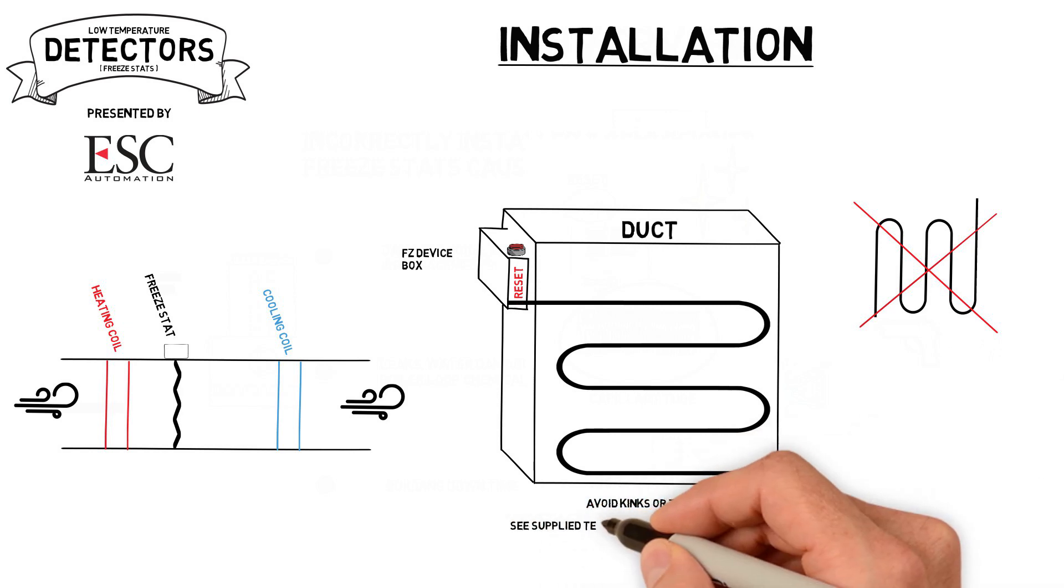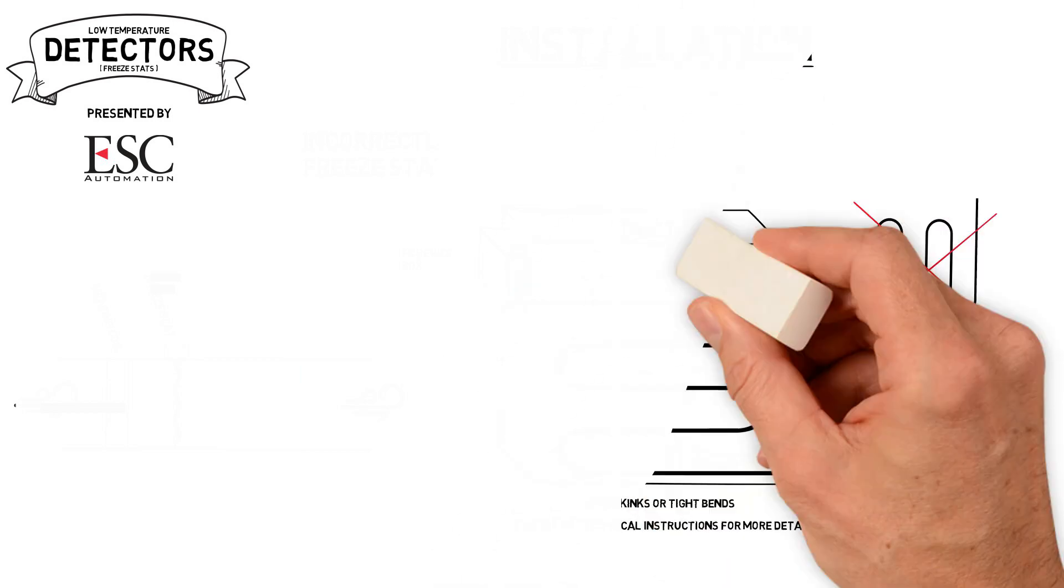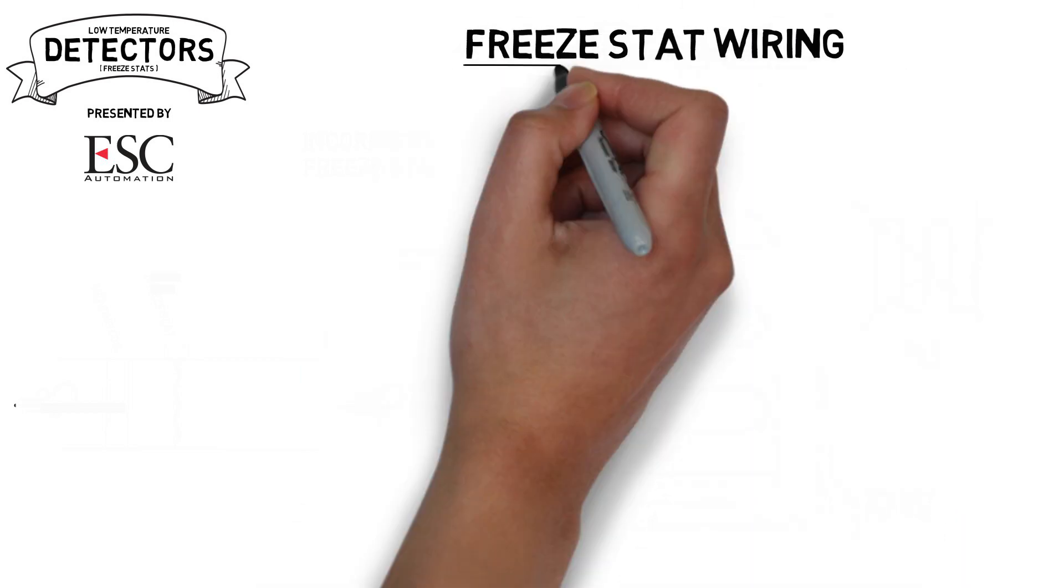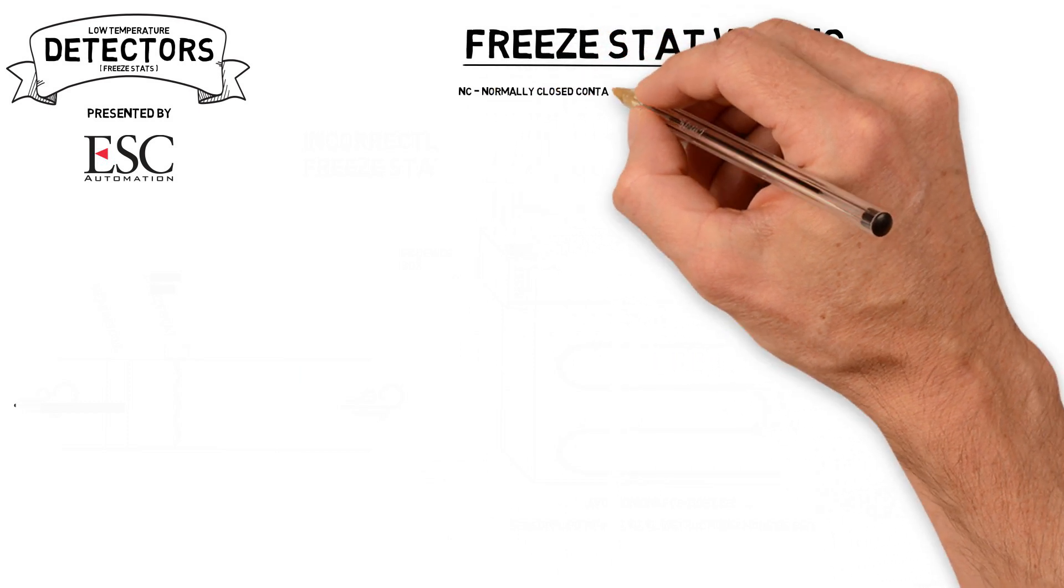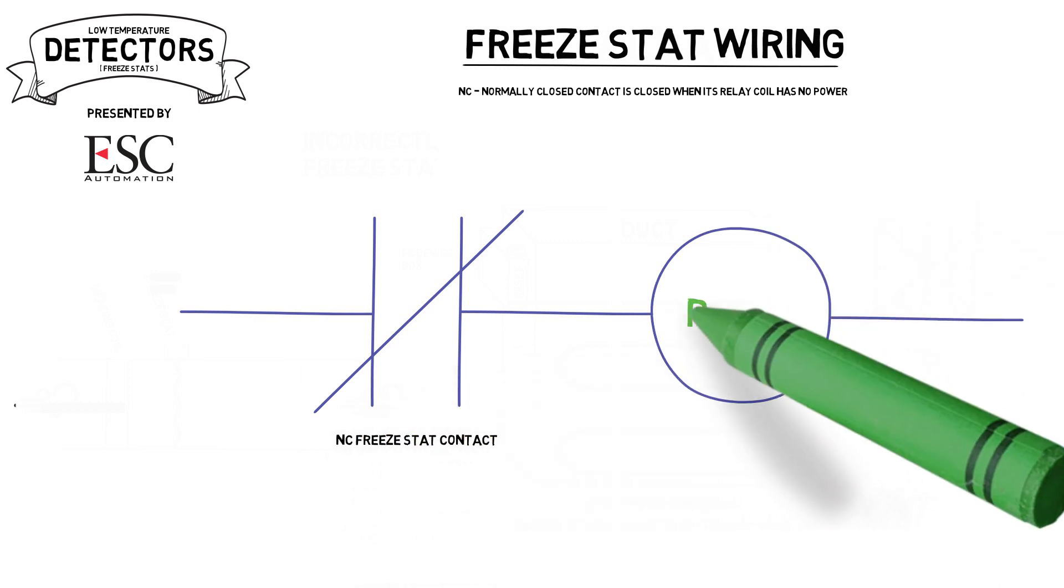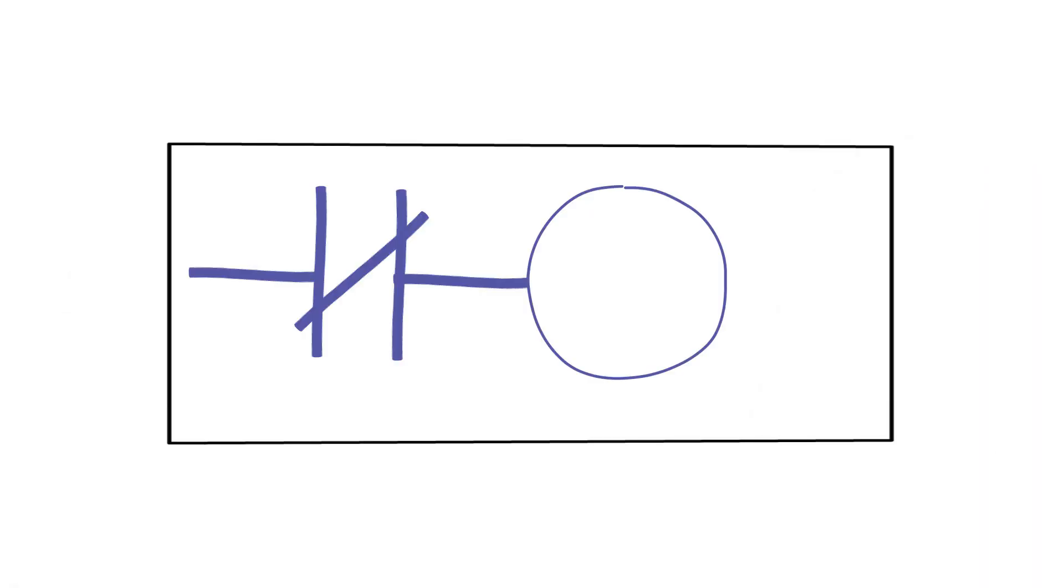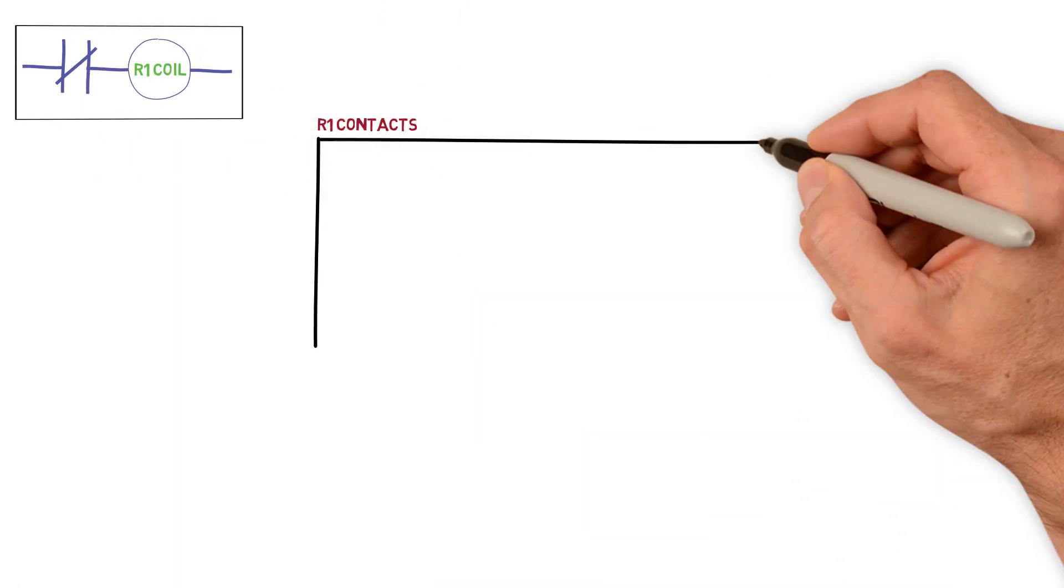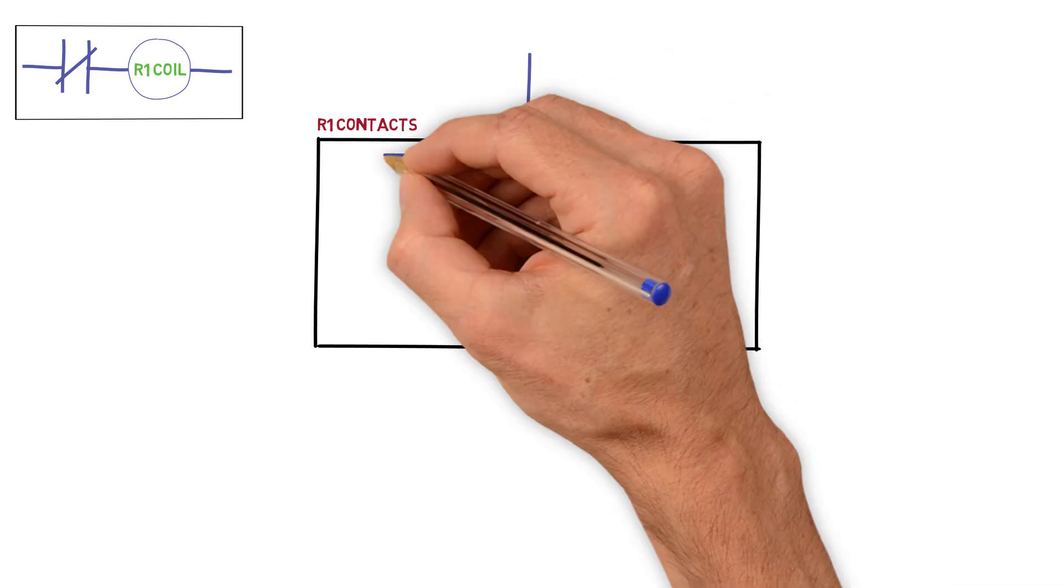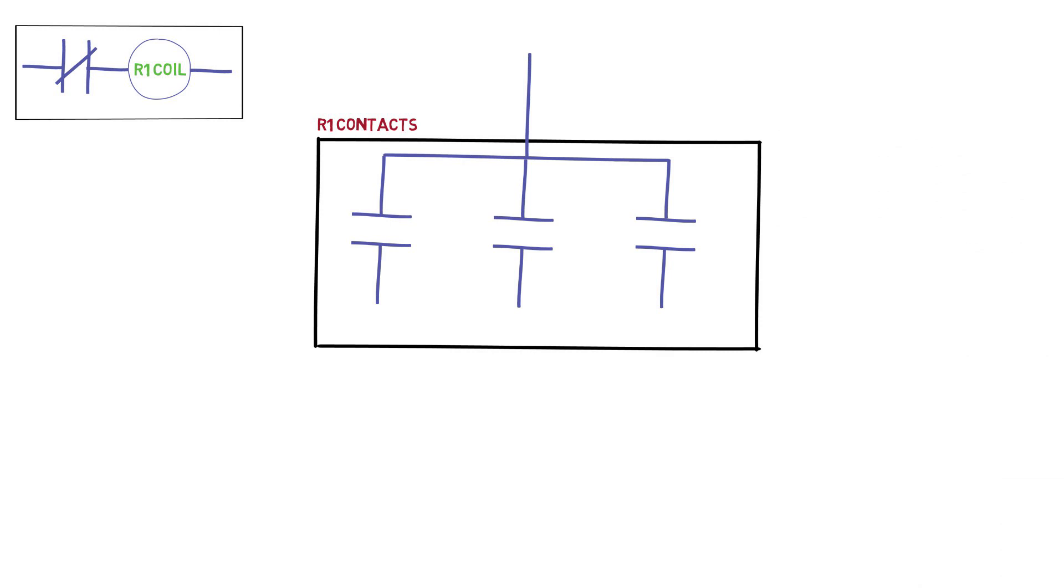Now, wiring the freeze stat properly is essential to have it operate as intended. The normally closed contact on the freeze stat should be wired to power up the freeze relay. Upon detecting cold air below its set point, the freeze stat will open its contacts and de-energize the relay. The relay is to be a three-pole relay in which only the normally open contacts are to be used. This makes the freeze stat system bulletproof by ensuring that the control voltage is always disconnected whenever the relay is de-energized.